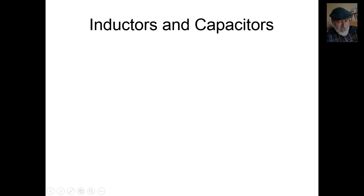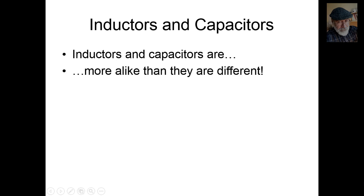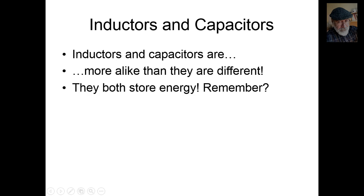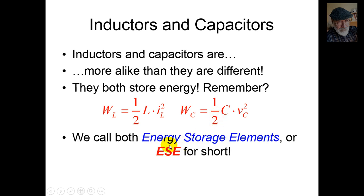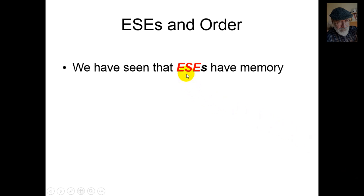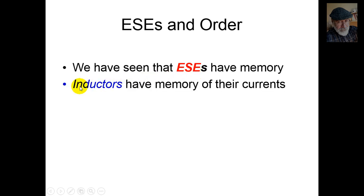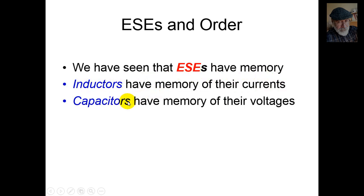At the center of this conversation are inductors and capacitors. Inductors and capacitors are more alike than they are different. Why? Because both of them store energy — inductors according to this formula and capacitors according to this other one. That's why we call them both energy storage elements, or ESC for short. We have seen that energy storage elements have memory. Inductors have memory of their currents; capacitors have memory of their voltages.